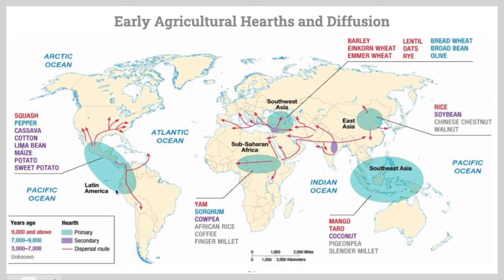As we look across the world at some of the major early agricultural civilizations, in the Americas — Central America, or what was known as Mesoamerica, Latin America — people were domesticating the land very early on. Anything written in red means those crops were planted over 9,000 years ago. In Mesoamerica, we see squash being grown over 9,000 years ago, peppers 7,000 to 9,000 years ago, and then sweet potatoes, potatoes, maize, and beans.